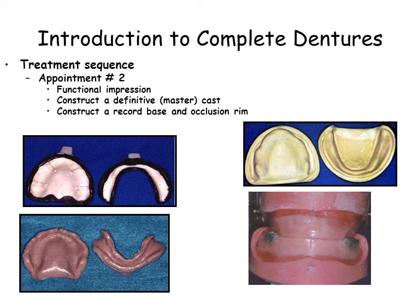At the second appointment, you will use a functional impression technique to fabricate definitive casts. From these casts, you will make a record base and wax rims to record the patient's maxillomandibular relationship, the MMR.